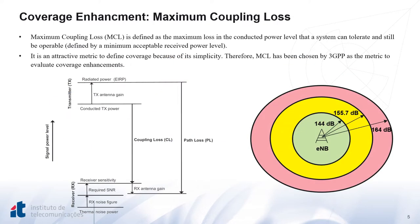A fundamental concept widely used to define the coverage target in wireless communication systems is what we call the maximal coupling loss. It is defined as the maximum path loss level that the system can tolerate and still be operable. This definition can be shown in the link budget. Due to its simplicity, it has been chosen by the 3GPP as a metric to evaluate coverage enhancement.